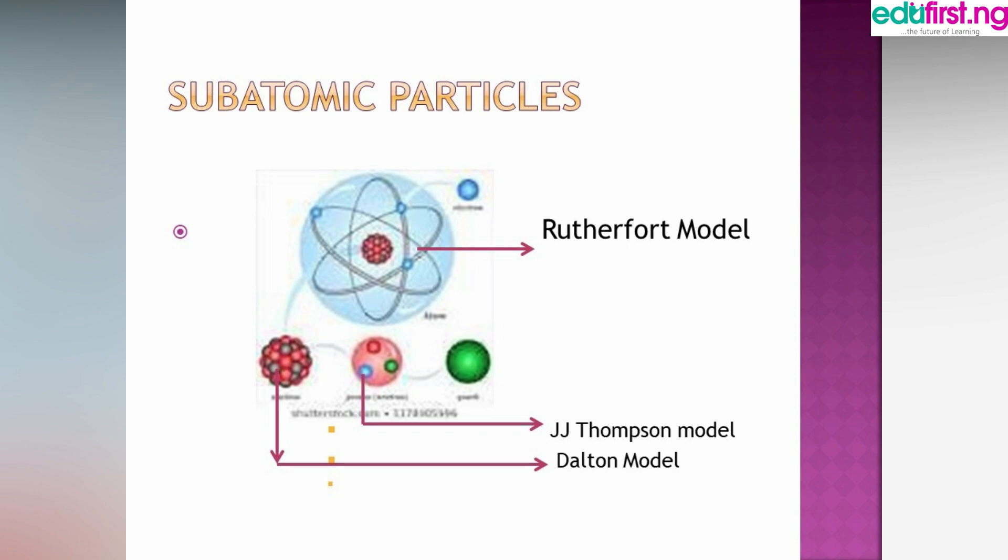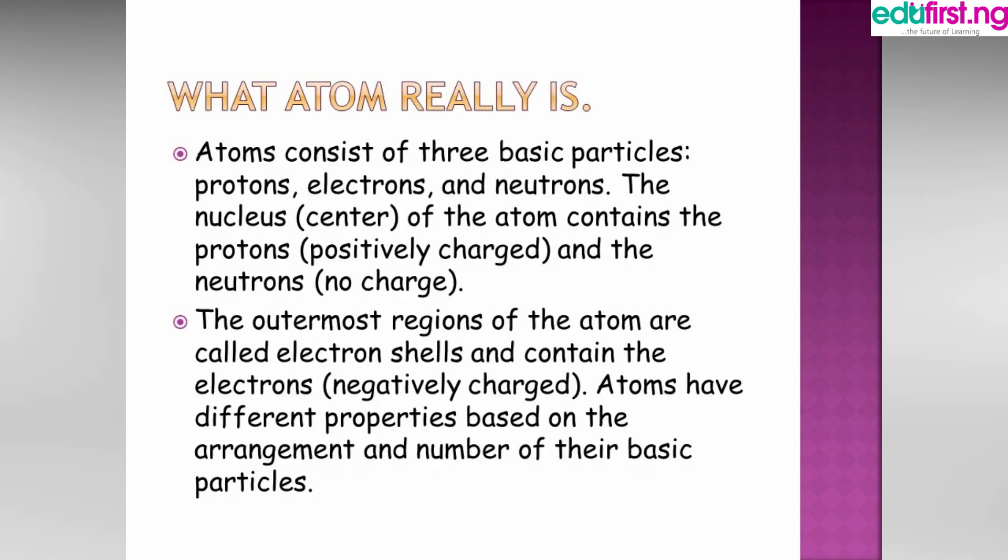What atom really means: atom consists of three basic particles - protons, electrons, and neutrons. The nucleus, which is at the center of the atom, contains the protons which are positively charged